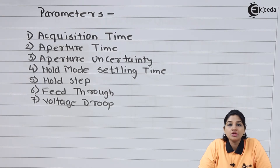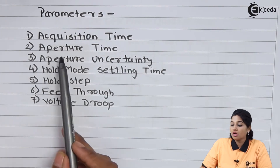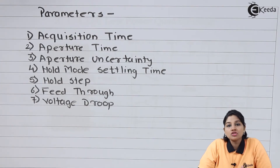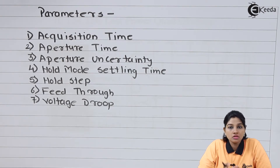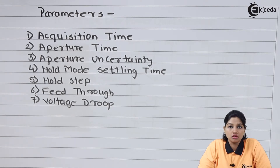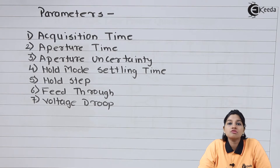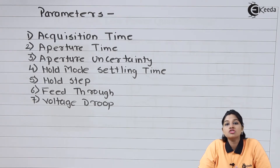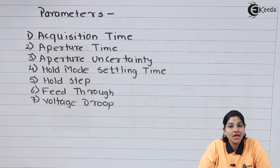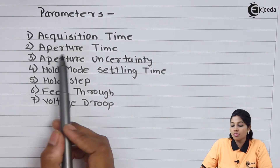The second parameter is aperture time. Ideally, as soon as the sample and hold circuit receives the hold command, the circuit should stop following any change in the input signal. But practically this does not happen — even after receiving the hold command, the sample and hold circuit follows changes in the input signal for a short period of time. That time period is called aperture time.